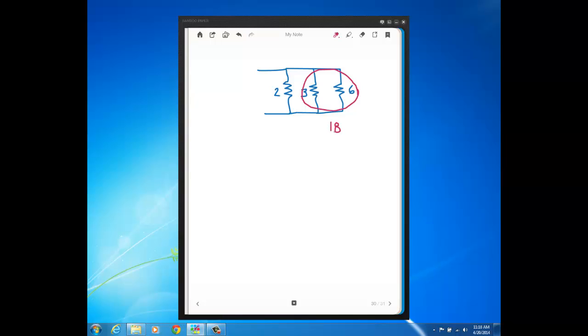Right, which is 3 times 6 divided by 9, 3 plus 6, so 2 ohms. So the 3 and 6 in parallel give me 2 ohms.